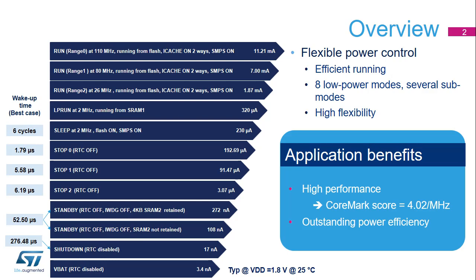STM32L5 devices support 8 main low power modes: low power run, sleep, low power sleep, stop 0, stop 1, stop 2, standby, and shutdown modes. Each mode can be configured in many ways, providing several additional sub-modes. In addition, STM32L5 devices support a battery backup domain called VBAT. The high flexibility in power management provides both high performance with a CoreMark score equal to 4.02 per MHz, together with an outstanding power efficiency.